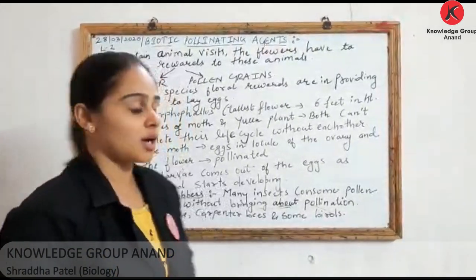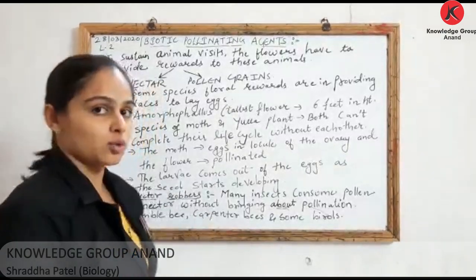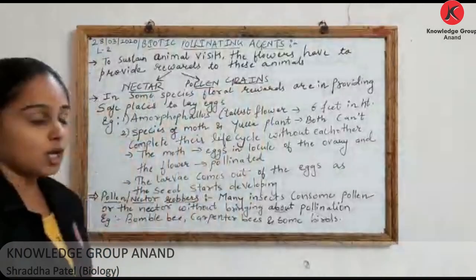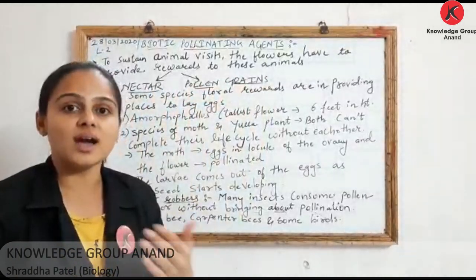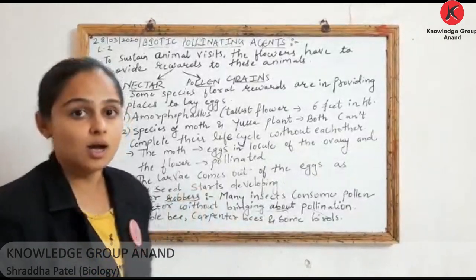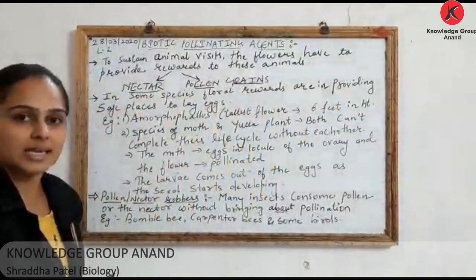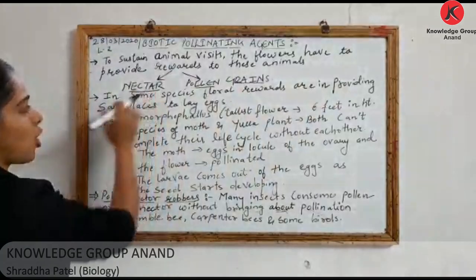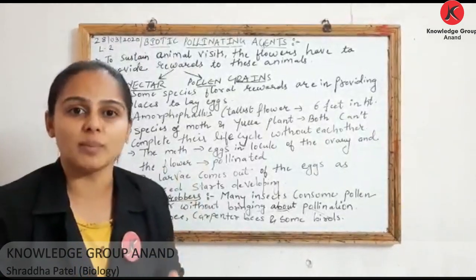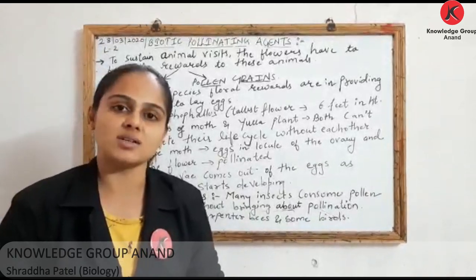Animals do not visit flowers unless the flowers provide some kind of reward — special floral rewards. The floral rewards that are provided to attract animals are nectar as well as pollen grains. For sustained animal visits, flowers have to provide these rewards. When any animal comes to the flower, pollen grains stick to their body because pollen grains of animal-pollinated plants are generally sticky in nature.